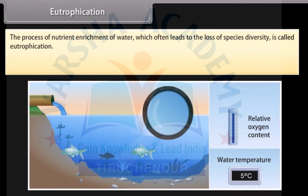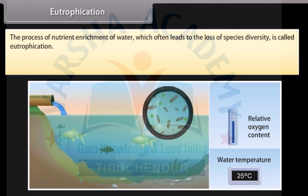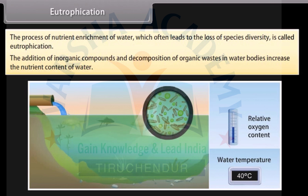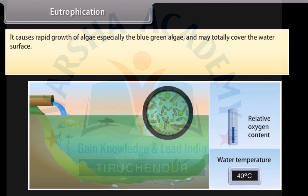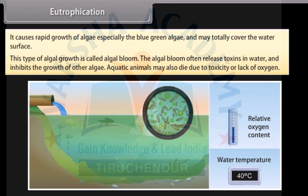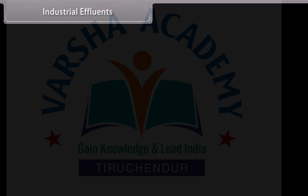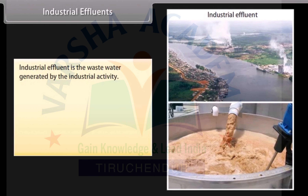The process of nutrient enrichment of water, which often leads to the loss of species diversity, is called eutrophication. The addition of inorganic compounds and decomposition of organic wastes in water bodies increase the nutrient content of water. This causes rapid growth of algae, especially blue-green algae, which may totally cover the water surface. This type of algal growth is called algal bloom. Algal blooms often release toxins in water and inhibit the growth of other algae. Aquatic animals may also die due to toxicity or lack of oxygen.